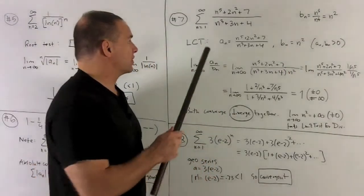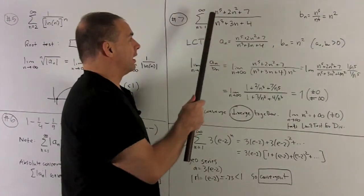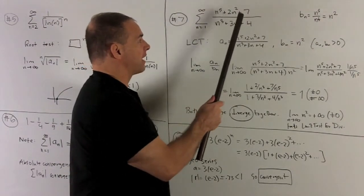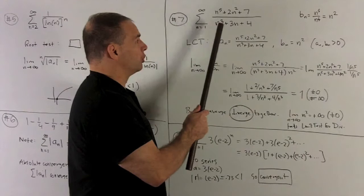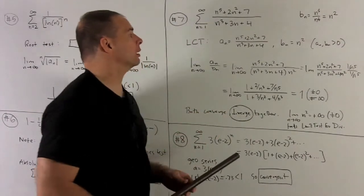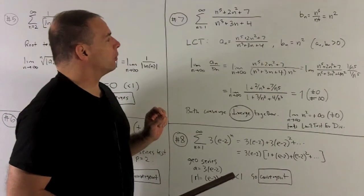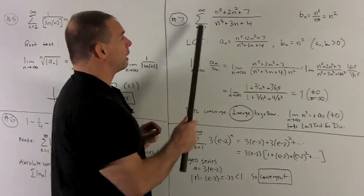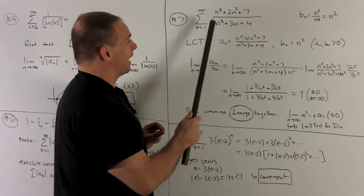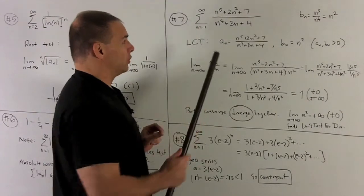Number seven, for the sum going from one to infinity, n to the fifth plus two n squared plus seven over n cubed plus three n plus four. So we sit back and squint a little bit. We'll notice that the lead terms here are going to make this look pretty much like n to the fifth over n cubed.